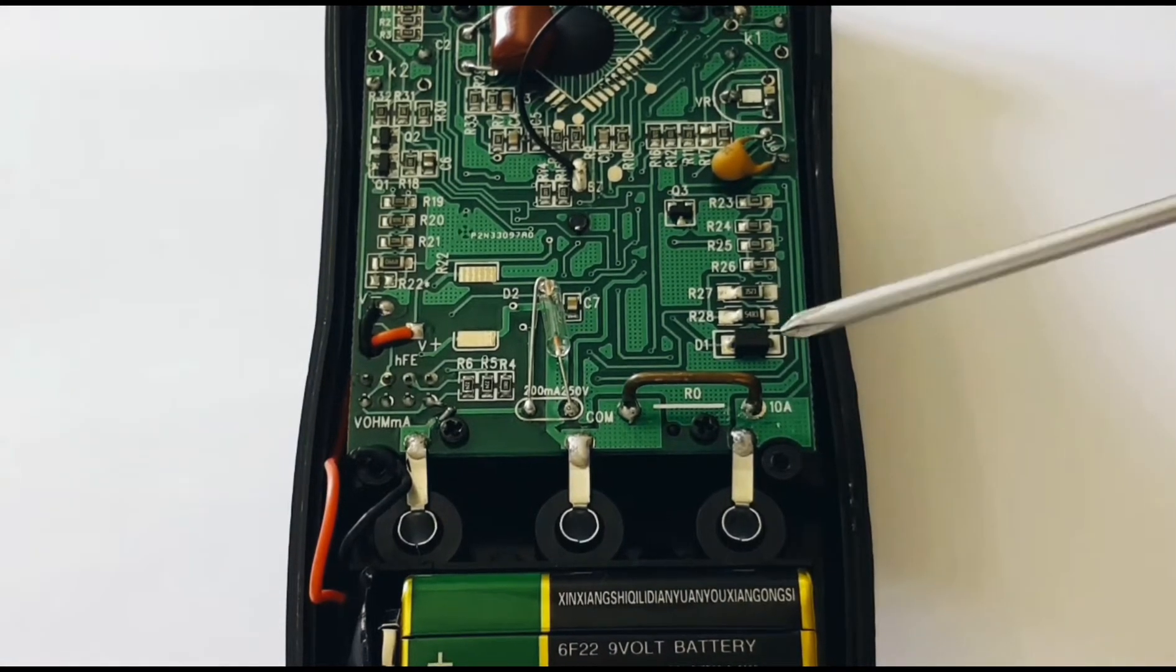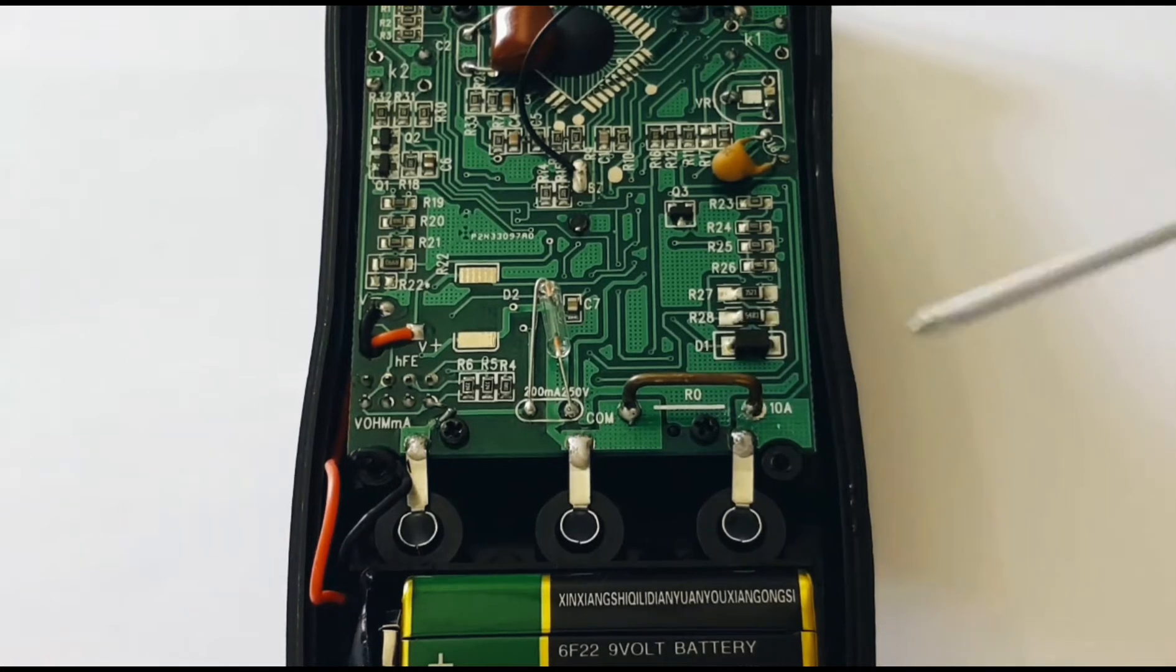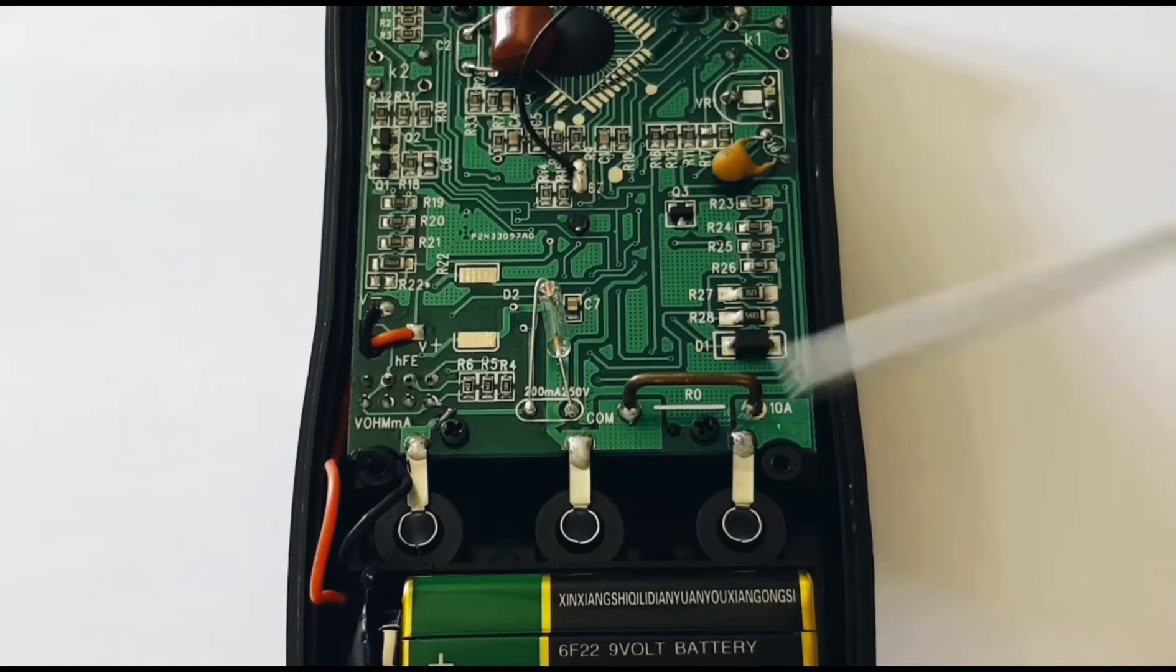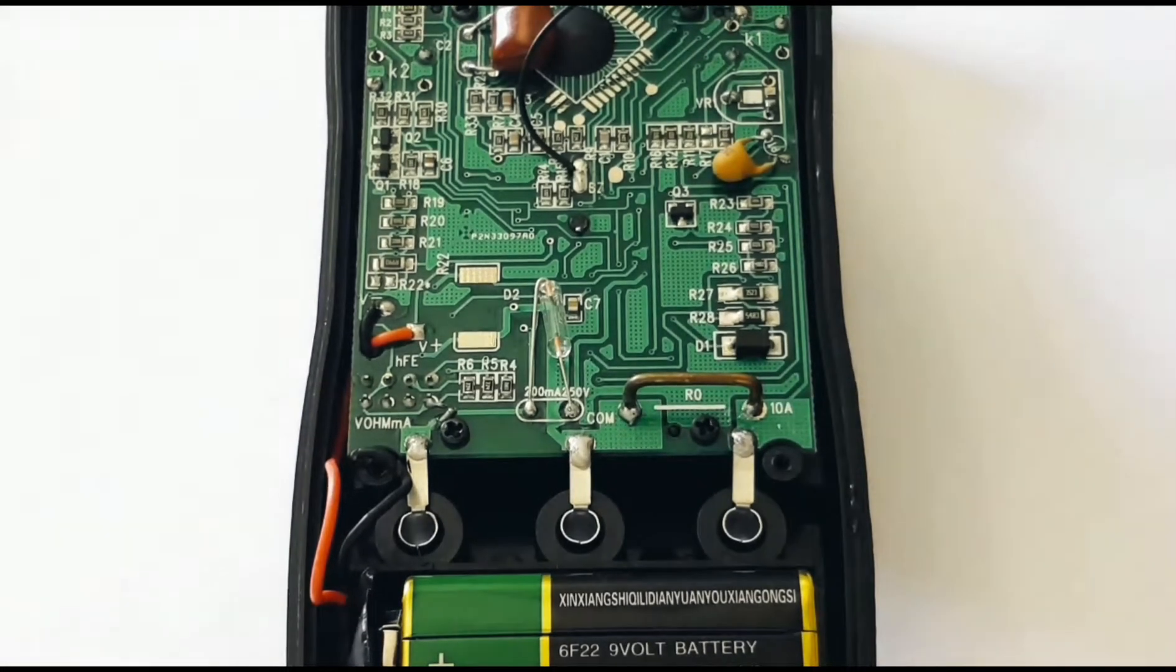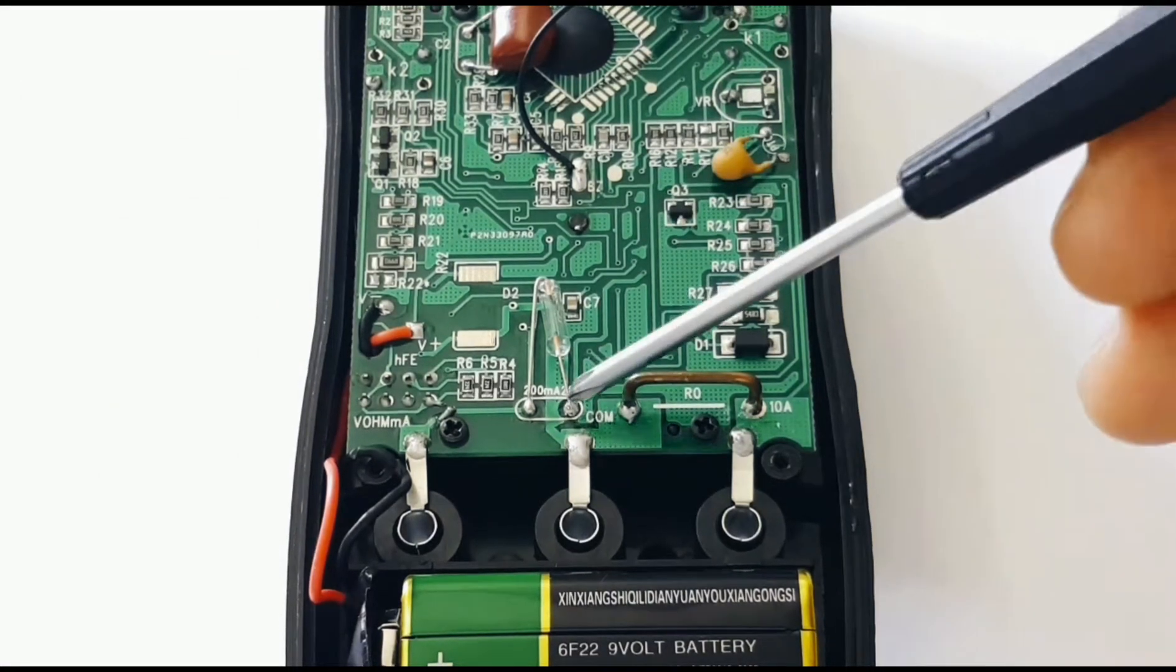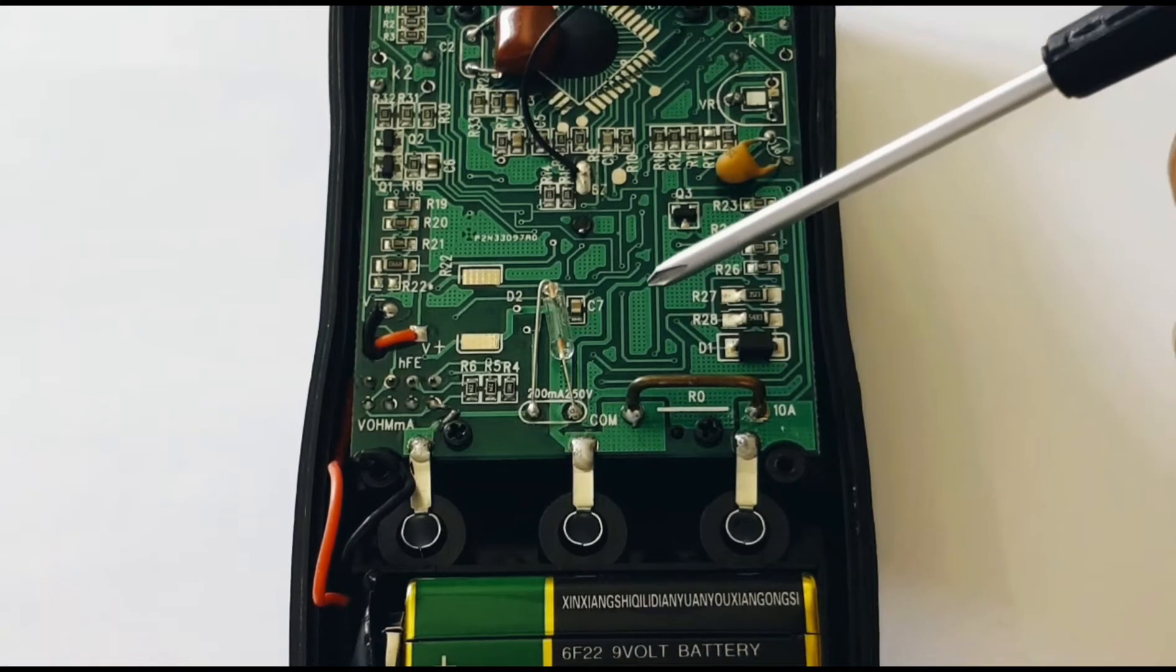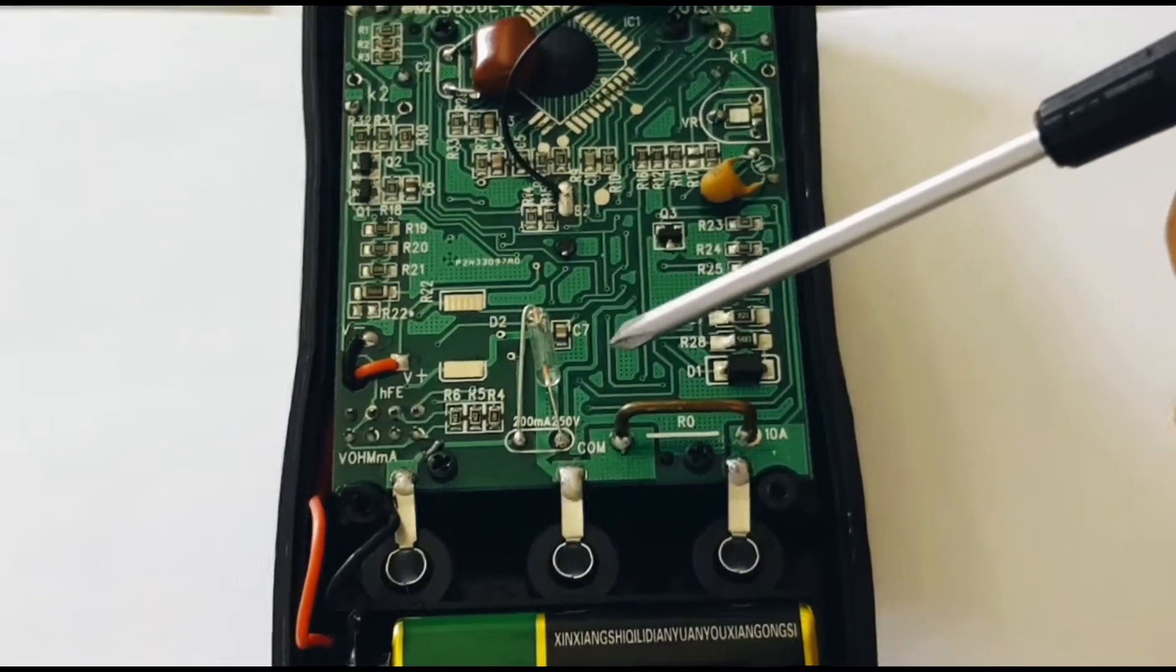Taking a closer look inside, there's our current shunt. Pretty small. Once again, it's unfused. You're not going to want to be measuring the current for any length of time. Moving up alongside, we have one of these classic 200 milliamp, 250 volt fuses.